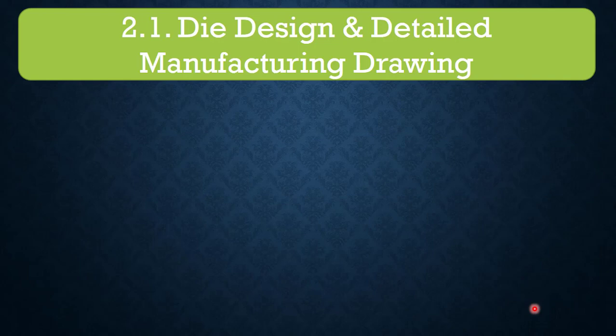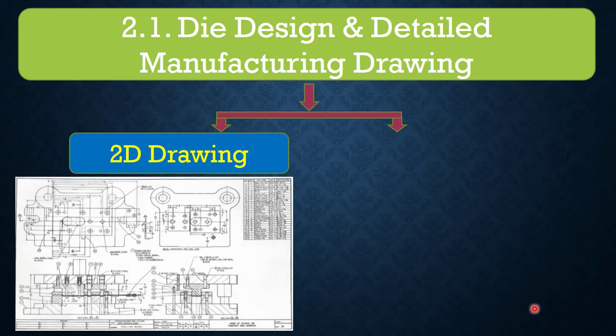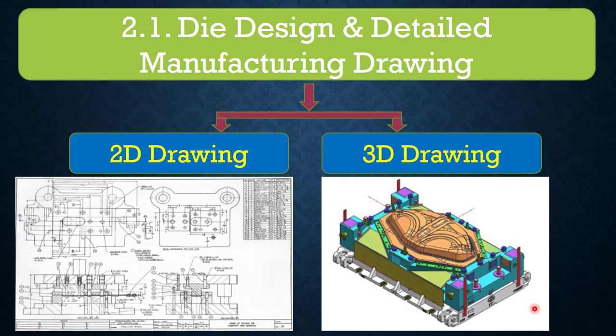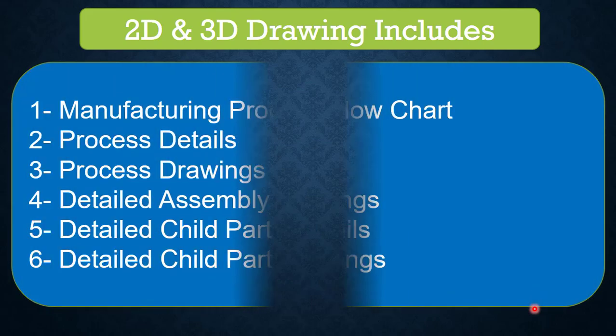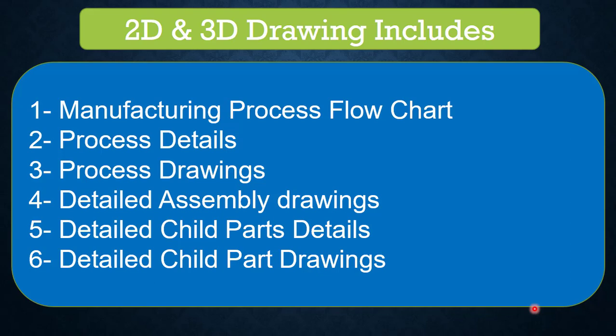There are two categories: 2D drawing and 3D drawing. Why do we need die drawings in 2D and 3D, and what are the requirements for preparing them? Without a die drawing we cannot make the complete die set with the expected quality. 2D and 3D drawings include: number one, manufacturing process flowchart — the flowchart's purpose is to give the high-level process steps of any manufacturing process. Number two, process details — what processes are involved in manufacturing the component.